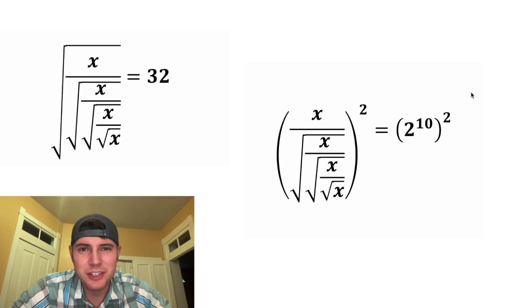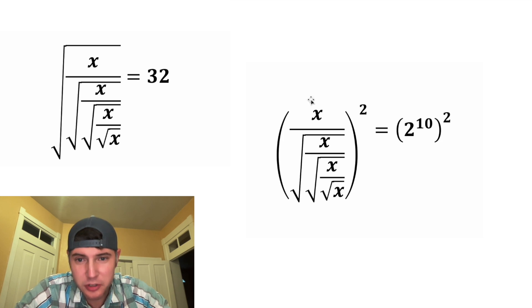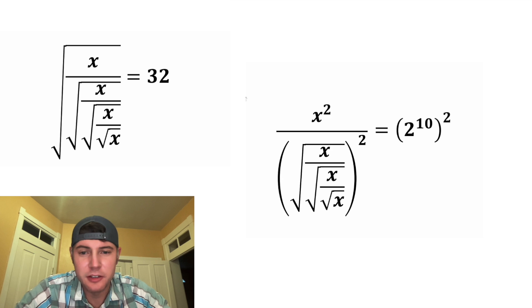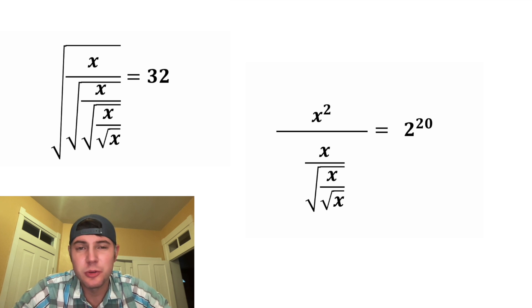And next, we square both sides of the equation. On this side, the square will go both to the numerator and to the denominator. It's going to look like this. And in the denominator, the square and the square root will cancel each other out. And on the right-hand side, we can multiply these exponents to give us 2 to the 20.